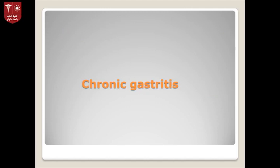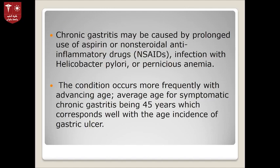Chronic gastritis may be caused by prolonged use of aspirin or non-steroidal anti-inflammatory drugs, infection with Helicobacter pylori, or pernicious anemia. The causes differ from acute gastritis — here the factors act over a long run. The condition occurs more frequently with advancing age; the average age for symptomatic chronic gastritis starts from around 45 years, correlating with the incidence of gastric ulcer.